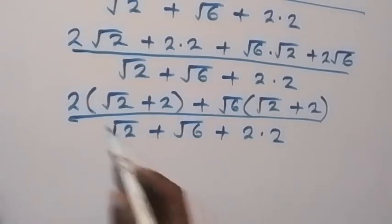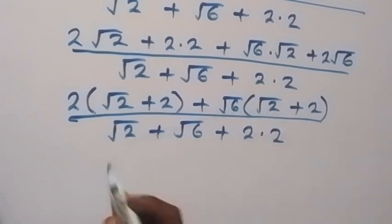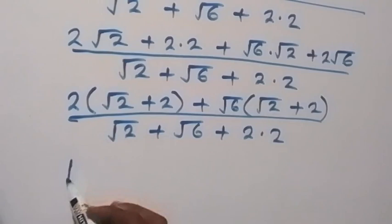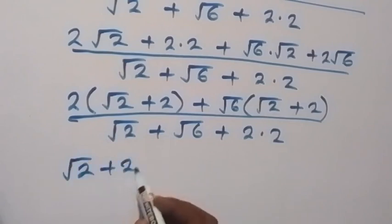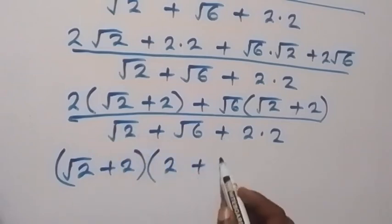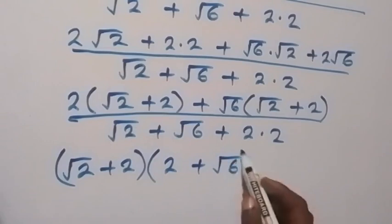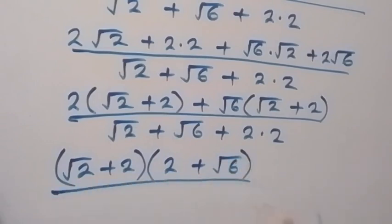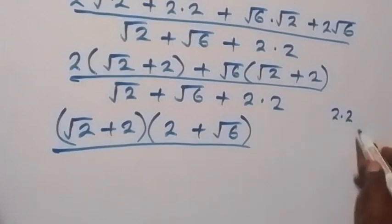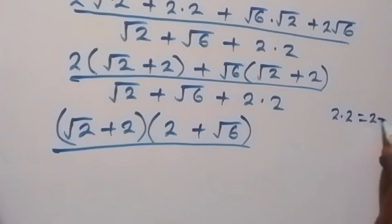We factor (root 2 plus 2) as common from the numerator, and what is left is 2 plus root 6. Then divided by what we have, which is 2 times 2. Now, 2 times 2 is 4, and this can equally be written as 2 plus 2 because 2 plus 2 is also 4.